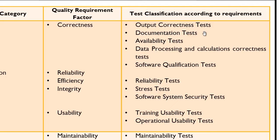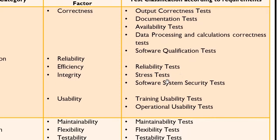Test classifications for the Operation category include: output correctness test, documentation test, availability test, data processing and calculations correctness test, software qualification test, reliability test, stress test, software system security test, training usability test, and operational usability test.